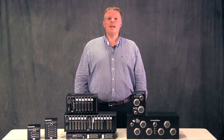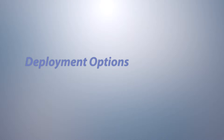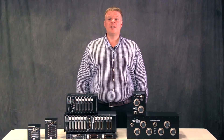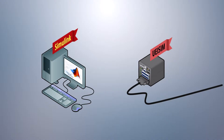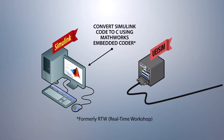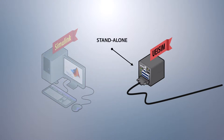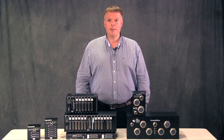The UEI SIM is designed to run your Simulink models on real I/O. First, you build a standard Simulink application. Next, you generate code using MathWorks Embedded Coder, previously known as Real-Time Workshop. Then, you compile the code with the UEI SIM as the target. You can run your module standalone or under supervisory control of the host PC.